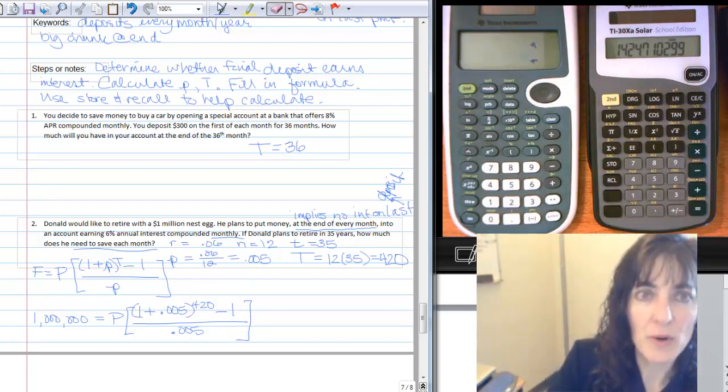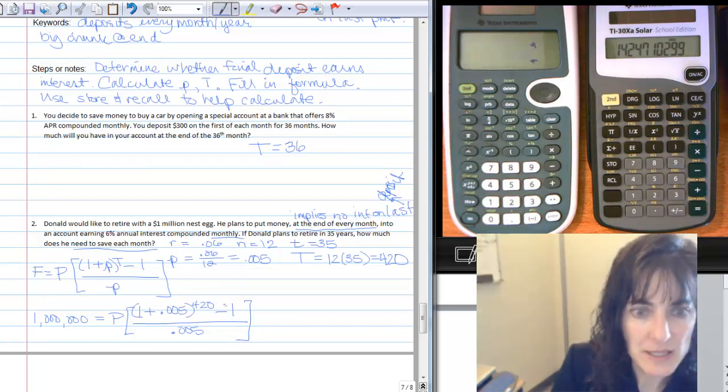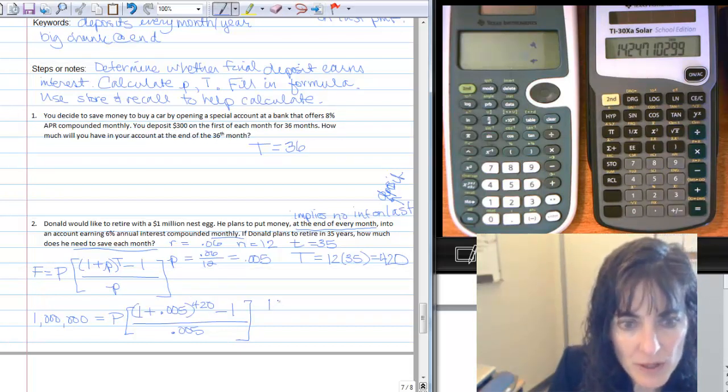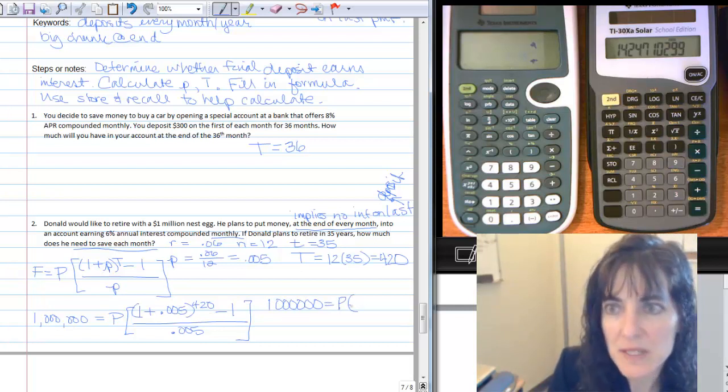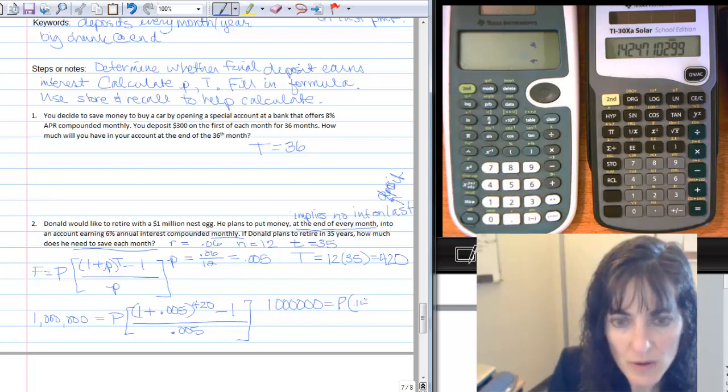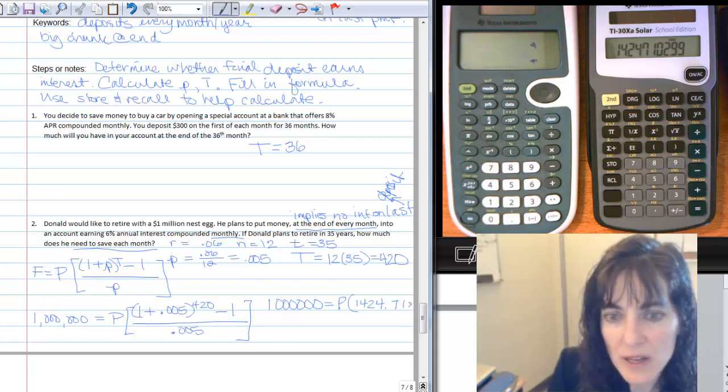And so I'm going to write that part down at least. And so I have 1,000,000 equals P times, and I have 1424.71, and it does go on and on. So I'm going to put dot, dot, dot.